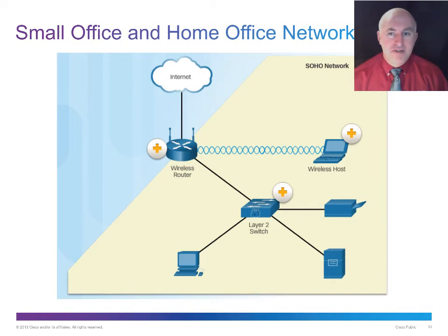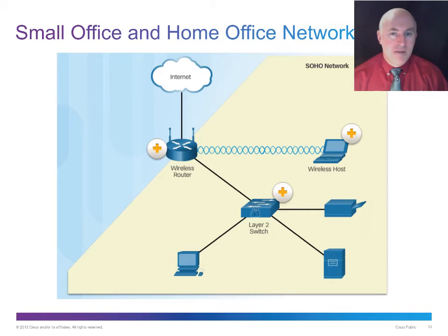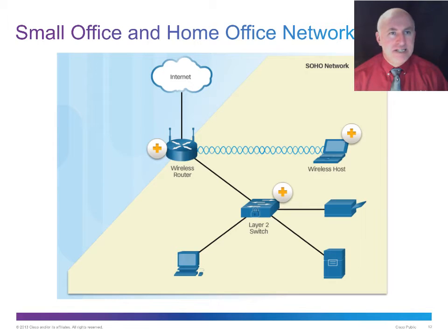In a small office network, you have a wireless router that is also your firewall and VPN — it does it all. You won't be able to benefit from IPS; you just can't afford it. With one to five users, that's not the type of network that's easy to secure, so we try to keep less critical information on it.